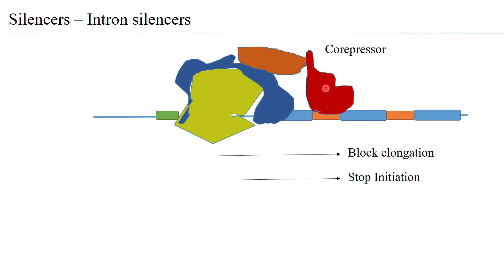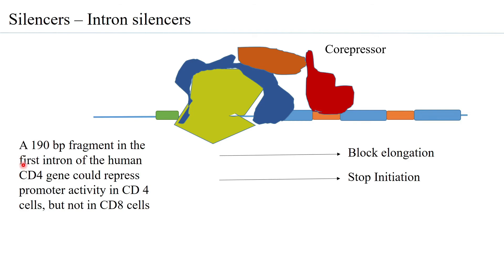A silencer can also be located much more downstream; in such a case, DNA looping occurs and the core repressor binds to the transcription machinery, silencing transcription of the gene. For example, a 190 base pair fragment present in the first intron of the human CD4 gene is able to repress the promoter activity of the CD4 gene in CD4 cells, but not in CD8 cells — demonstrating that intron silencers can be highly tissue specific.